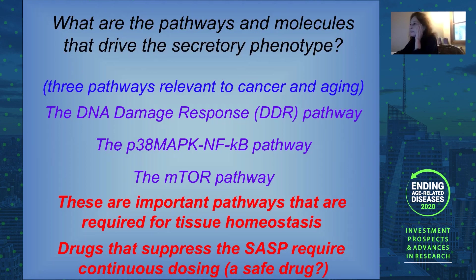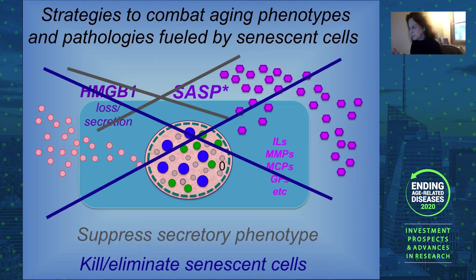The other strategy is: what if we can overcome this resistance to apoptosis and cause the cells to die? Right now this is a big thrust in the field — finding ways to selectively kill off senescent cells. Remember, they're not a major part of any tissue, so we're not worried about tissue atrophy. The goal is simply to get the cells to go away, which will then take care of their ability to secrete these deleterious molecules.